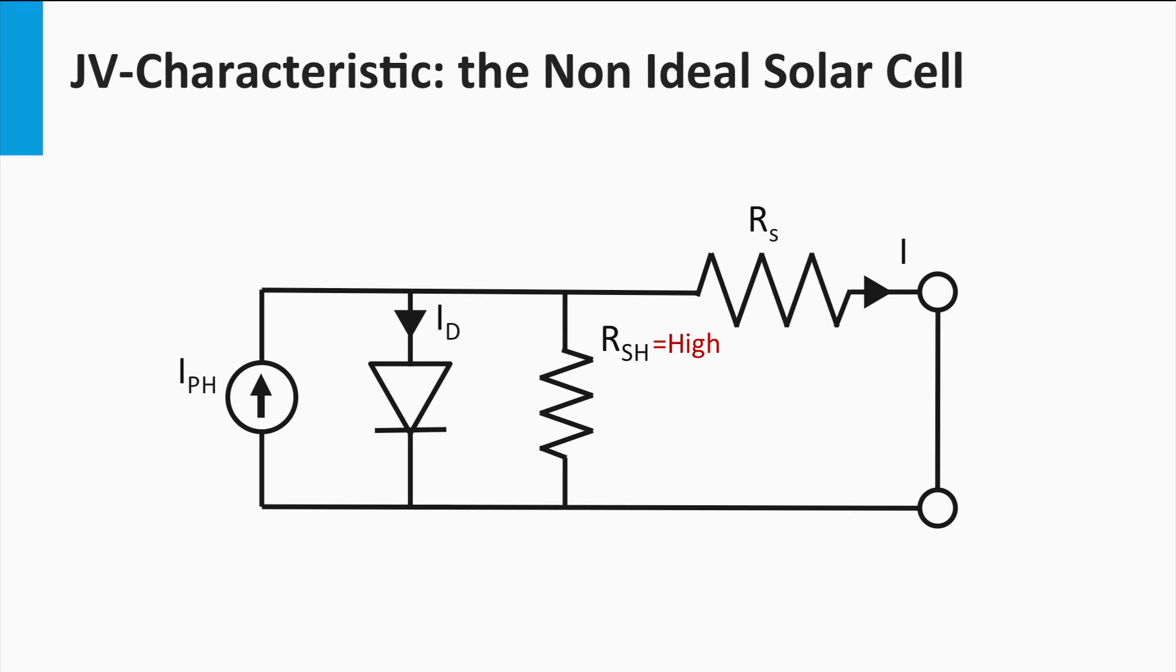Important to remind is that you would like to have the series resistance as small as possible and the shunt resistance as large as possible to come close to an ideal illuminated p-n junction.